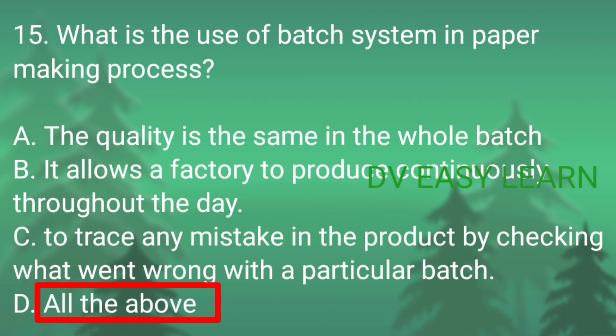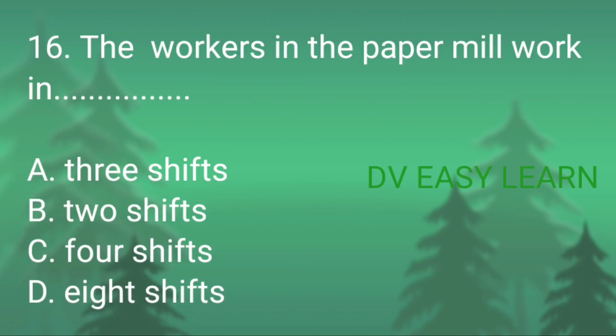The batch system ensures the quality is the same in each batch, it allows a factory to produce continuously throughout the day, and helps to trace any mistake in the product by checking what went wrong with a particular batch. Question number 16: the workers in the paper mill work in how many shifts —